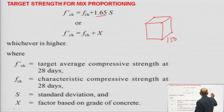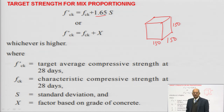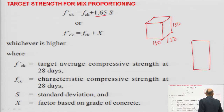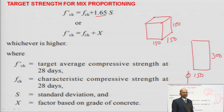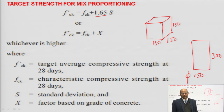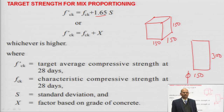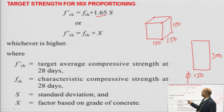Indian standard uses a cube of size 150×150×150 mm, but the ACI method considers cylinder strength — diameter 150 mm and height 300 mm. Due to the platen effect, the strength of the cube will be higher than that of the cylinder. India follows the practice of assessing concrete strength on 150 mm cube, which is why we reference the Indian standard here.